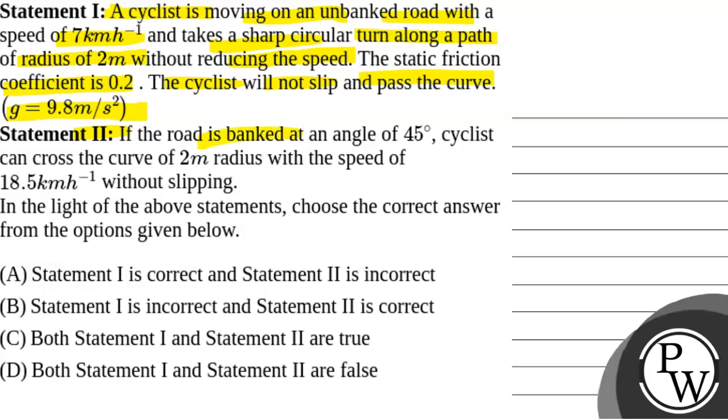Statement 2: If the road is banked at an angle of 45 degrees, the cyclist can cross the curve of 2-meter radius with a speed of 18.5 km per hour without slipping. In the light of the above statements, choose the correct answer from the options given below. Statement 1 is correct and Statement 2 is incorrect; Statement 1 is incorrect and Statement 2 is correct; Both Statement 1 and 2 are true; Both Statement 1 and 2 are false.